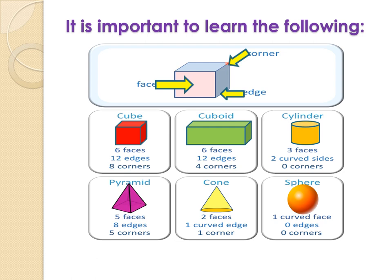In a cuboid we have 6 faces, 12 edges, and 4 corners. A cylinder has 3 faces, 2 curved sides and 0 corners. Pyramid: 5 faces, 8 edges, 5 corners. Cone has 2 faces, 1 curved edge, and 1 corner. A sphere has 1 curved face, 0 edges and 0 corners.